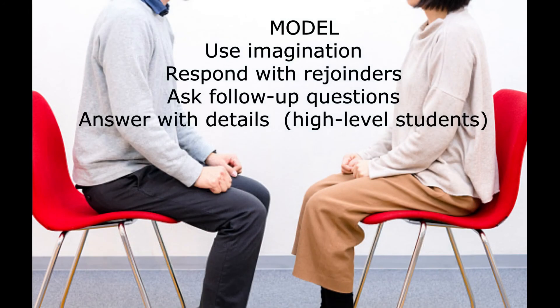Yeah, these sound very good. I can see how these would be more interesting and fun to talk about. We'd get a pretty good idea of the other person's personality through these. And there is one more step before starting the activity. We want to present a model of how they can best do this activity. This model will demonstrate how they should use their imagination, how they should respond with rejoinders — a conversation skill they're going to use even outside of class — and also how they should ask follow-up questions. For higher-level students, we can show them how they should answer with details, another good conversation skill. So here is how you can model speed dating.